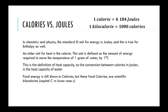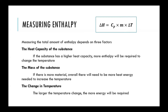When measuring enthalpy — that heat energy — it's related to three different things: the heat capacity of the specific material, the mass, and the change in temperature. Each different material has its own unique heat capacity, which is the amount of energy needed to raise the temperature of one gram of that substance by one degree. If you have more material, you will need more energy to increase that temperature. The change in temperature is final minus initial.